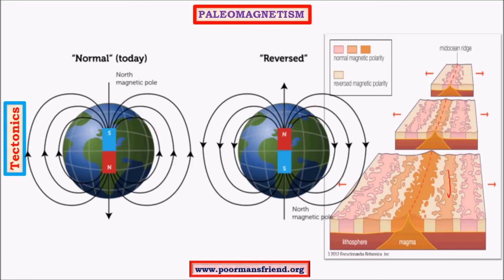Assuming a certain alignment of rocks at a certain period, after some time there is a reversal in magnetic field. A rock layer forming after that reversal will have a different magnetic alignment. Rocks with similar magnetic alignments are found equidistant from the ridge — if a layer on one side has a certain orientation, a layer equidistant from the ridge on the other side will have the same orientation. This symmetrical pattern on both sides of the ridge is a key evidence of paleomagnetism.